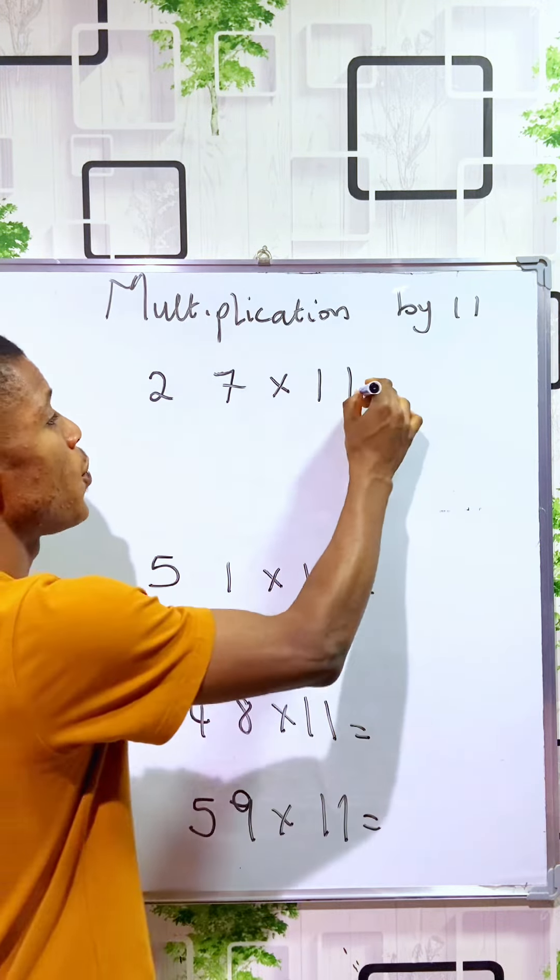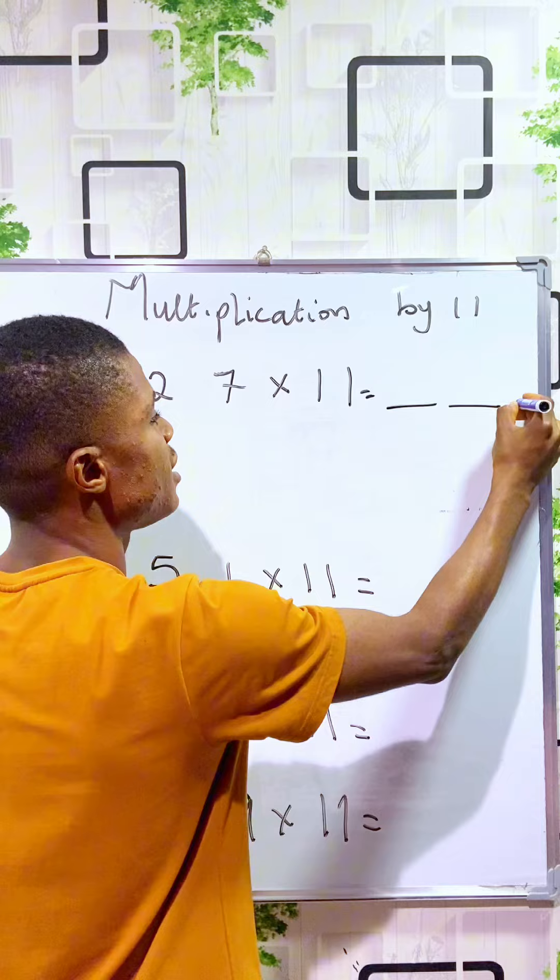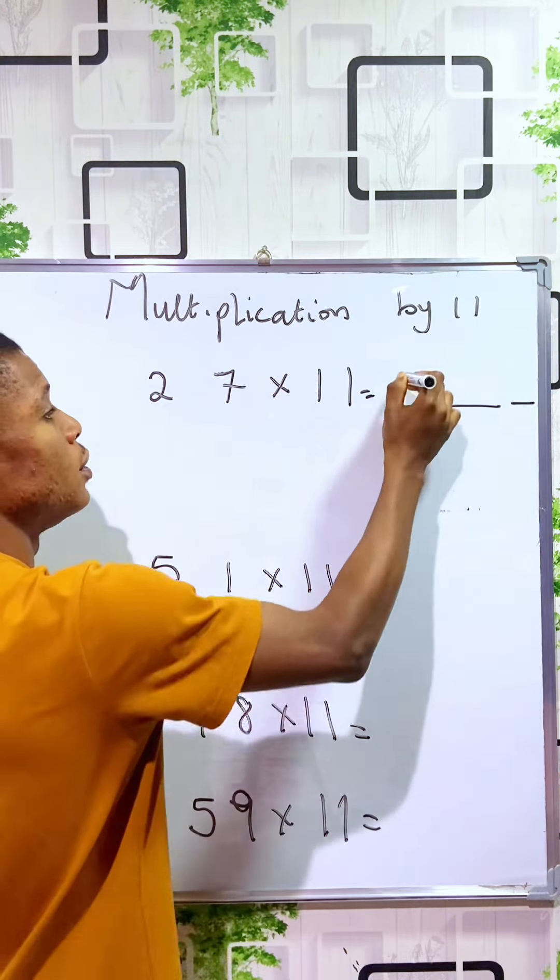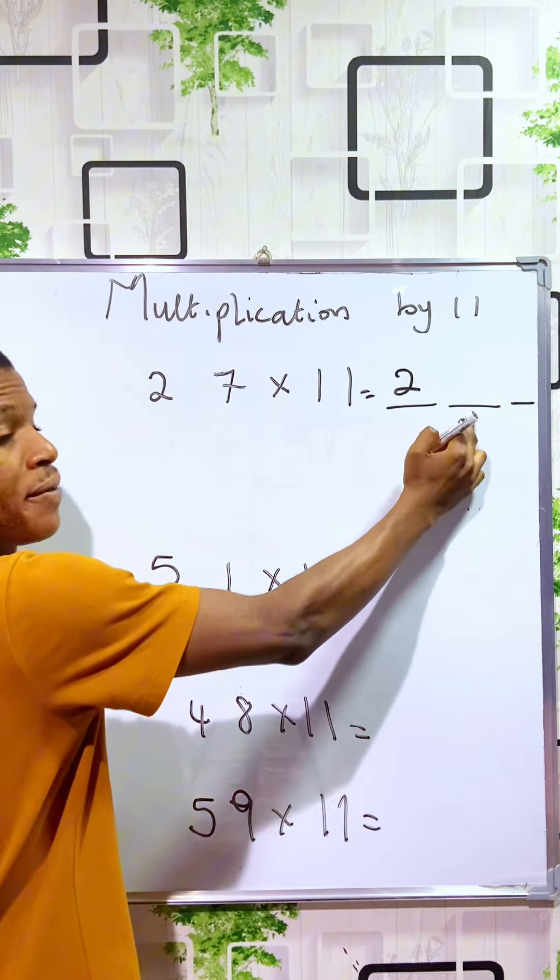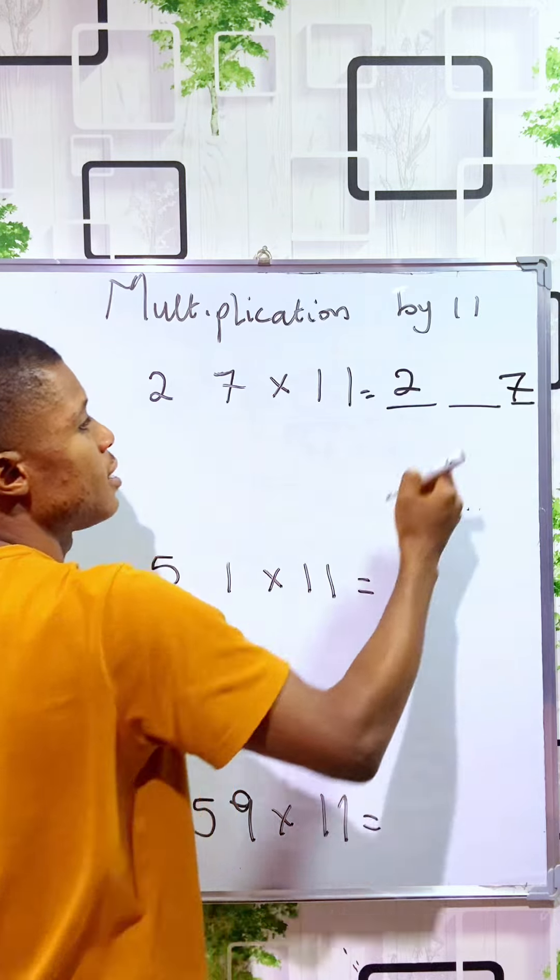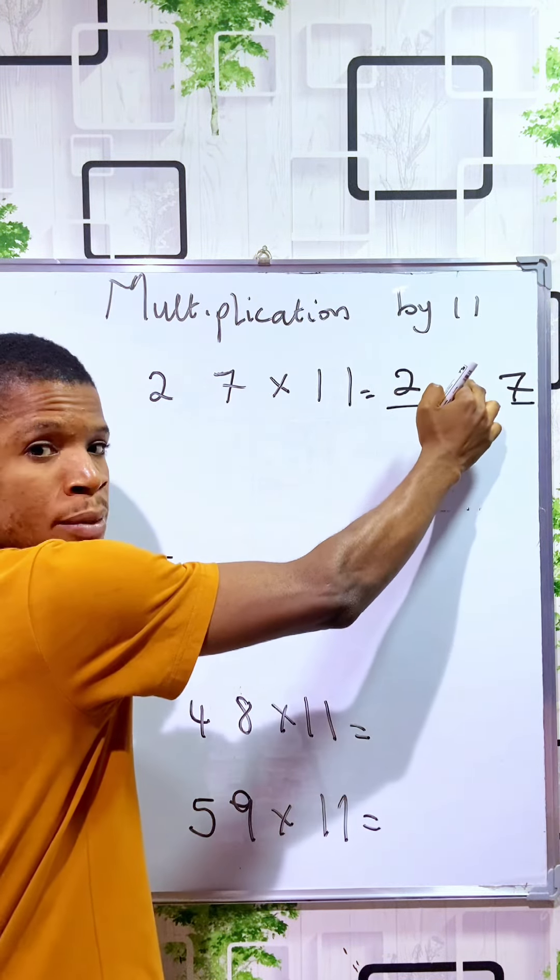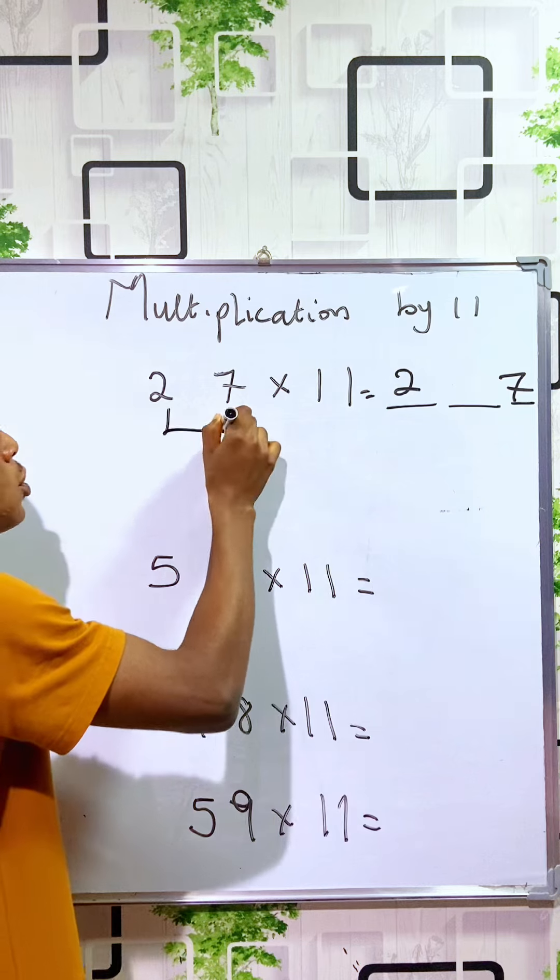To do that, we have to create three spaces. You write the first digit, give a space, and write the last digit. The number that will fill the middle term is the sum of the two digits.